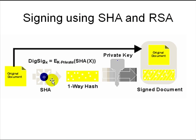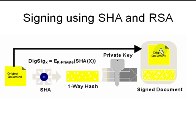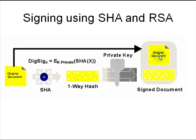So the original document goes through SHA, a one-way hashing function. You run your private key through it, encrypt the hash, and that becomes the signature at the bottom, with the original document at the top. When the other person receives it, they use your public key to open the signature, then compute the same hash of the original document and compare it with the original to make sure nothing has been tampered with.